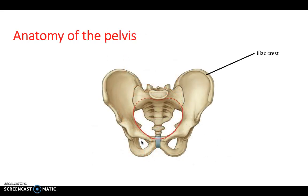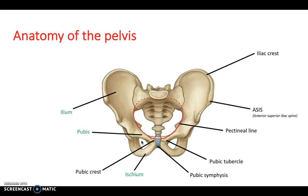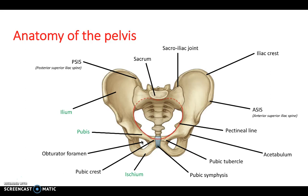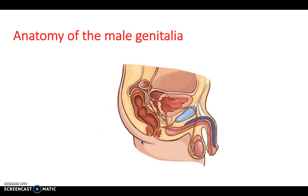Looking at the pelvis in more detail: the iliac crest, the ASIS or anterior superior iliac spine, the pubic tubercle, pubic symphysis, pubic crest, and pectineal line. The pelvis can be split into three fundamental parts: the ilium, the ischium, and the pubis. At the top we have the sacrum, the posterior superior iliac spine, the sacroiliac joint, the acetabulum, and the obturator foramen. It's useful to pause and label these structures yourself.